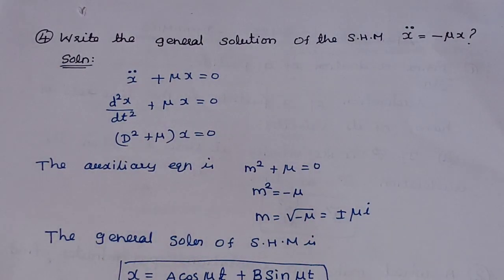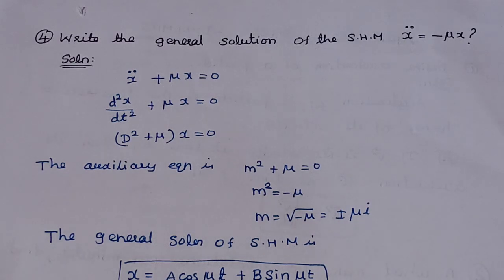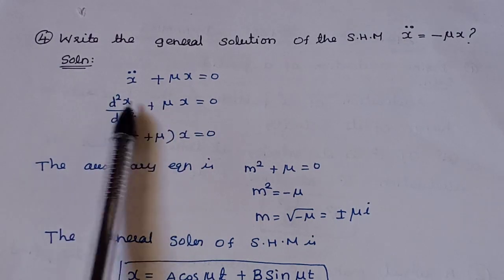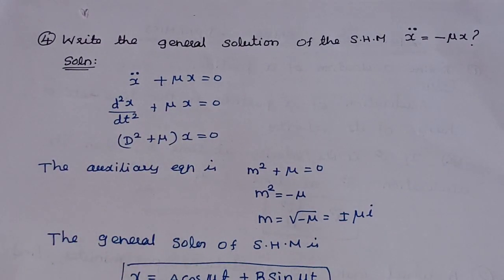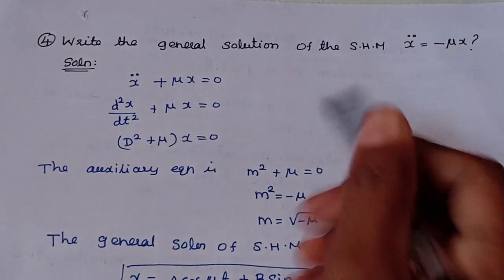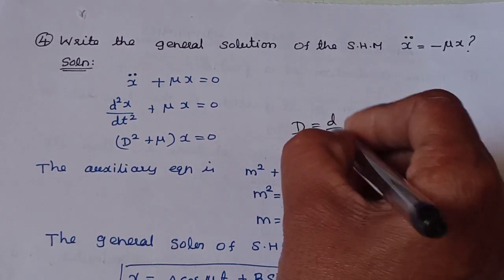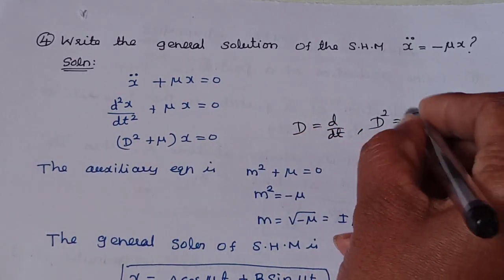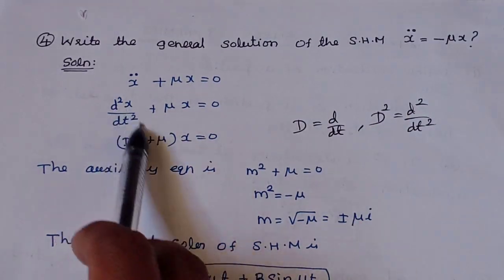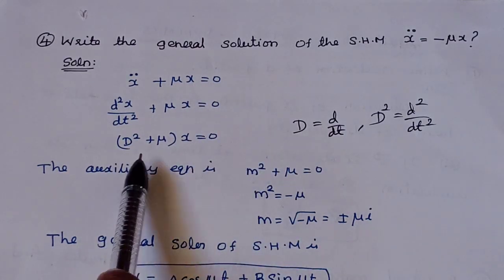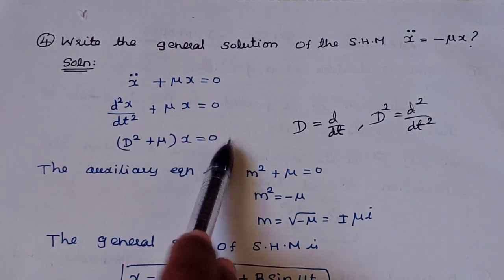Write the general solution of SHM: x-double-dot equals minus μ·x. The right-hand side is μx; the left-hand side x-double-dot represents the second derivative. Using the differential operator D, where D represents d/dt, D-squared represents d²/dt², the equation becomes (D² + μ)x = 0.